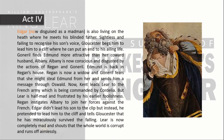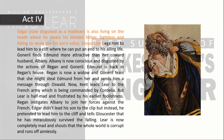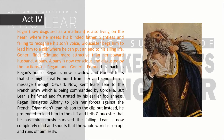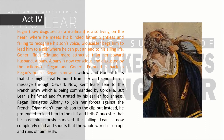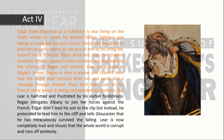Act 4: Edgar, now disguised as a madman, is living on the heath where he meets his blinded father. Sightless and failing to recognise his son's voice, Gloucester begs Edgar to lead him to a cliff where he can put an end to his life. Goneril finds Edmund more attractive than her cowardly husband Albany. Albany is now conscious and disgusted by the actions of Regan and Goneril. Edmund is back in Regan's house. Regan, now a widow, fears Goneril might steal Edmund from her and sends him a message through Oswald.